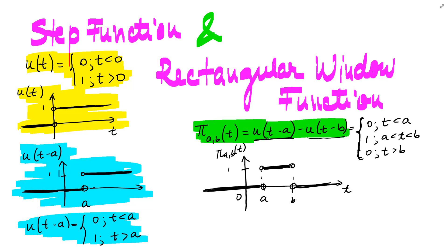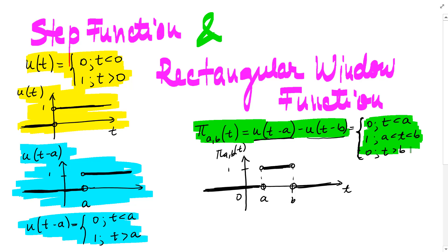Another function is the rectangular window function, which is defined as the difference between two unit step functions. So pi between a and b of t equals u of t minus a minus u of t minus b, and that is 0 for t less than a, 1 for t between a and b, and 0 for t greater than b.